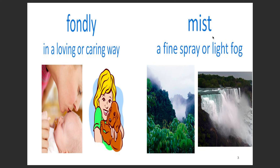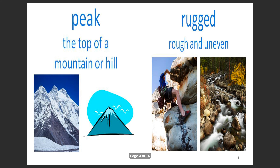Mist is our second word. Mist is a fine spray or a light fog. You can see that in these two pictures — the mist is clear. Next word is peak. The peak is the top of a mountain or a hill. You can see this is the peak of the mountain, and there are some peaks of some mountains up here.